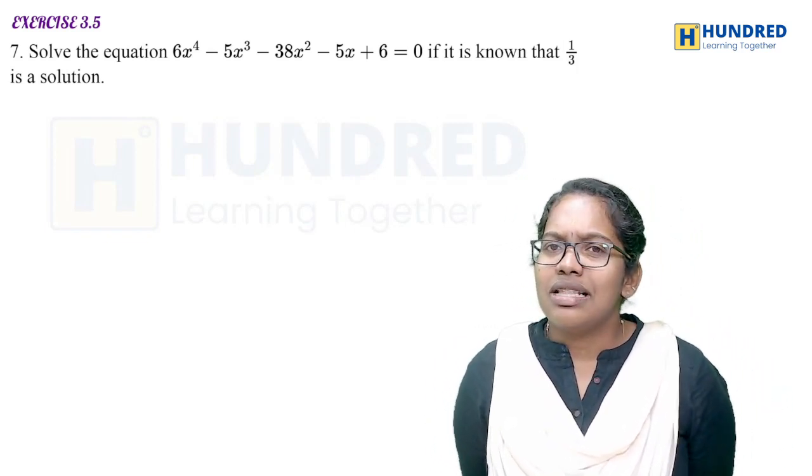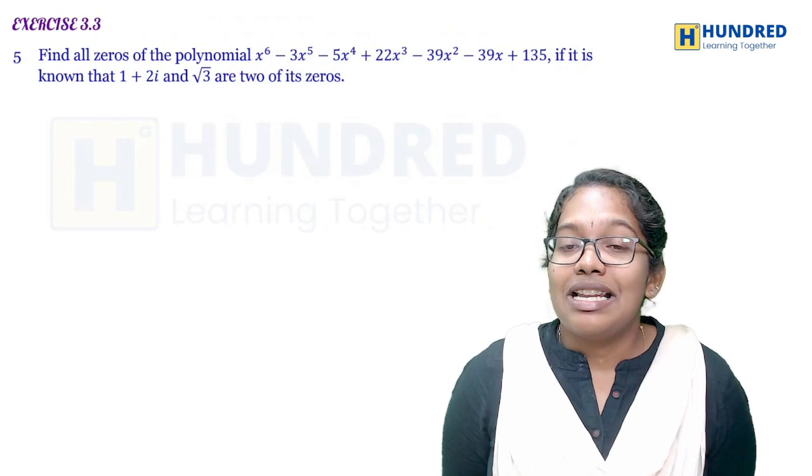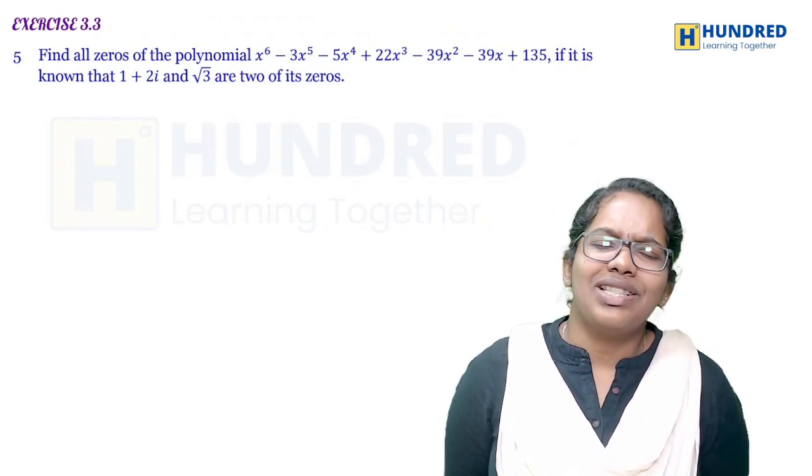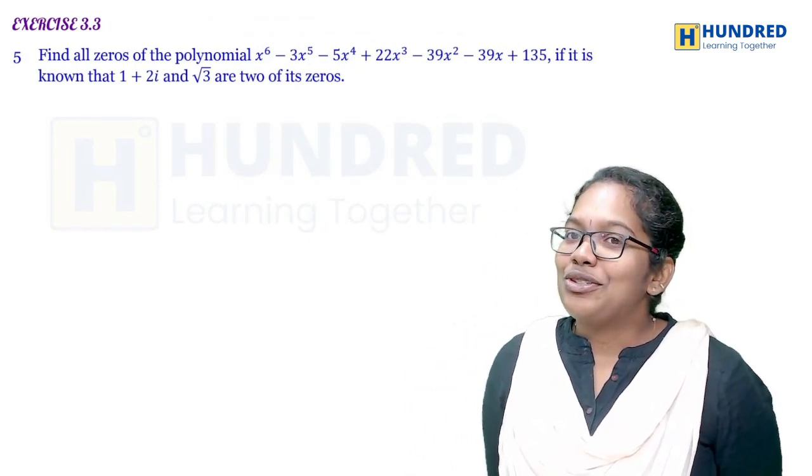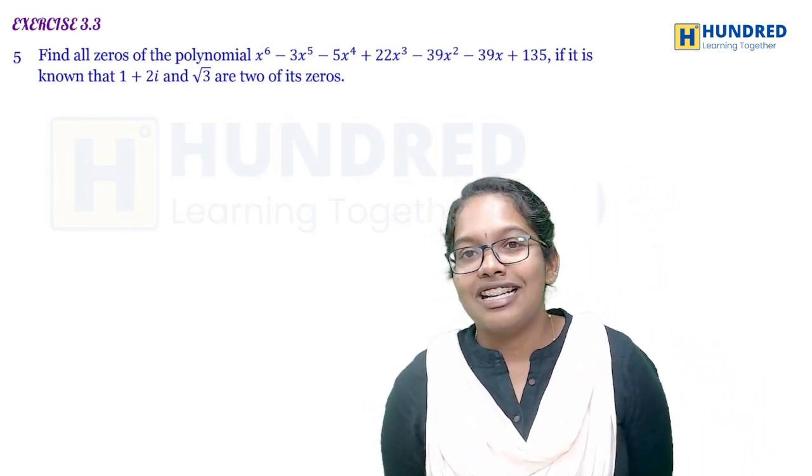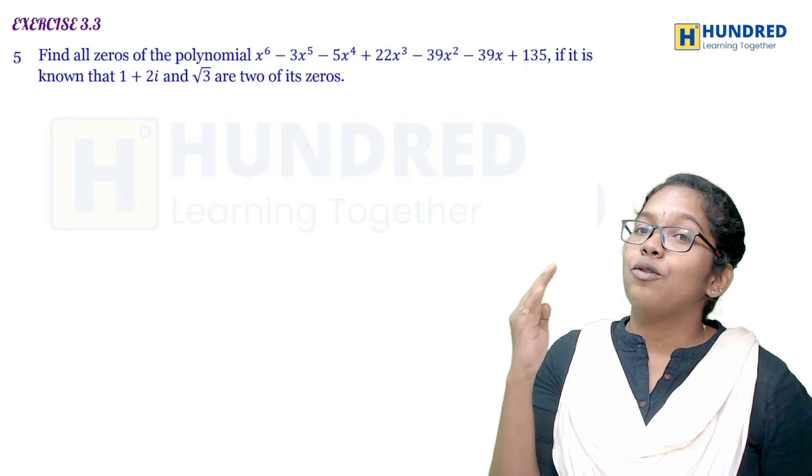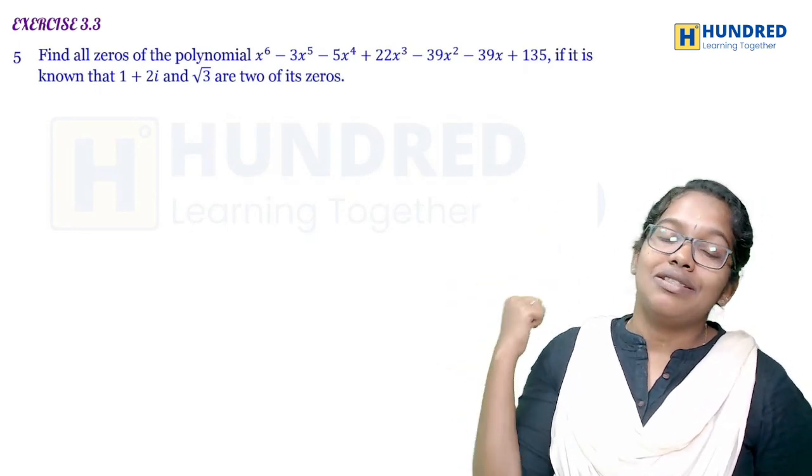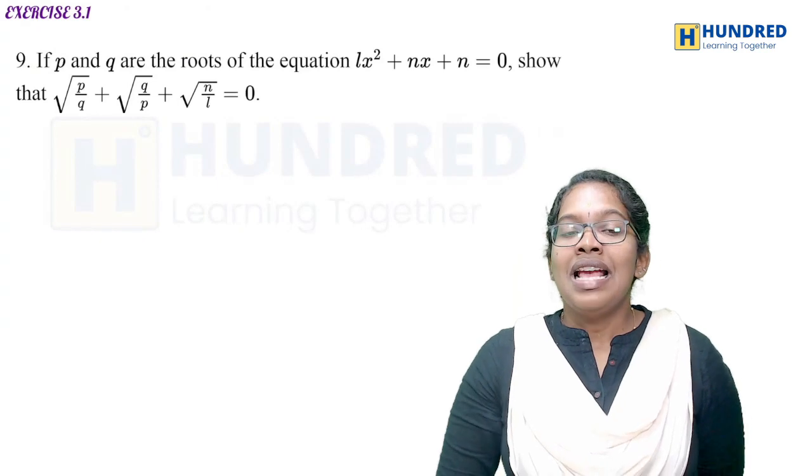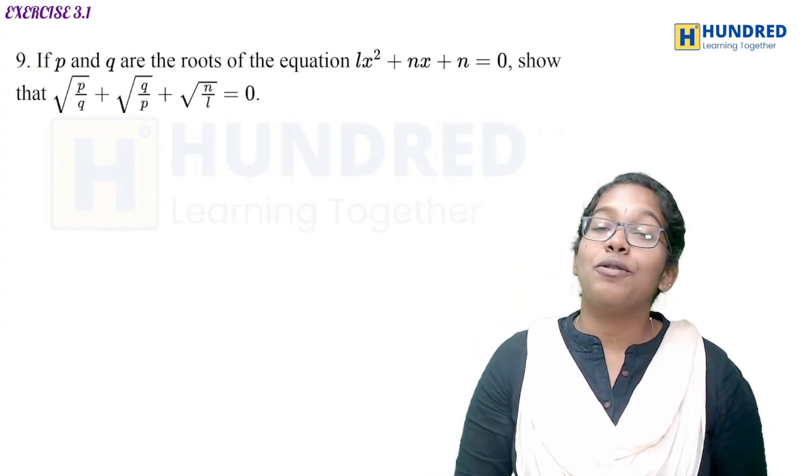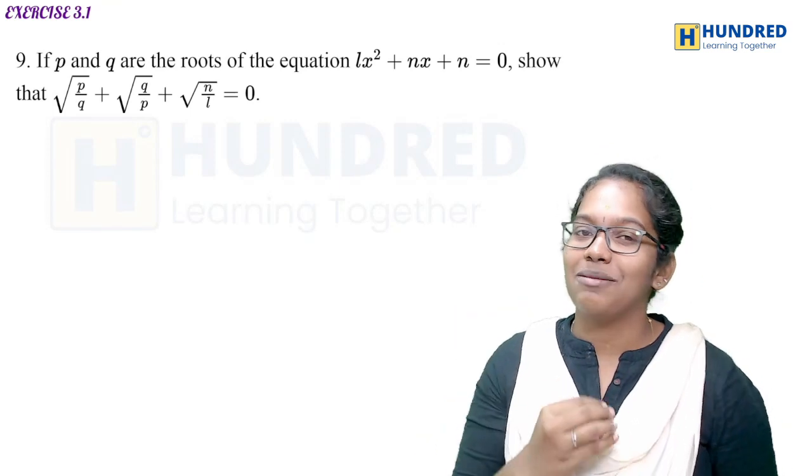We can go with synthetic division to solve and find Exercise 3.3. This sum is very important. A sixth-degree polynomial, that means six roots total. Two roots are given, they are conjugates, so that gives you four roots. And the four roots as factors multiplied, you will have a quadratic equation.